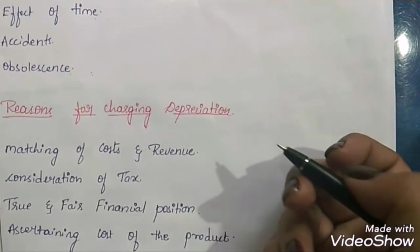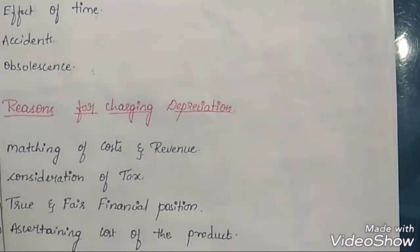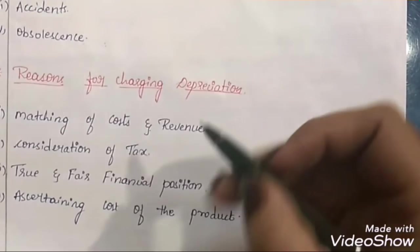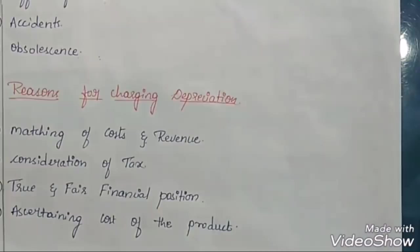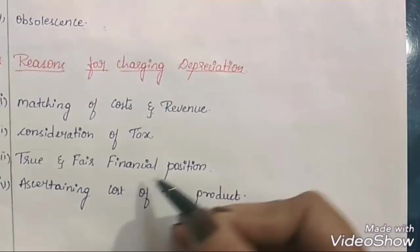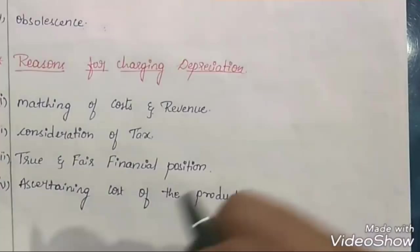Another reason is consideration of tax — when we charge depreciation on assets, we have to pay lesser tax, so depreciation is charged as part of tax planning. Next is true and fair financial position: by charging depreciation, we can ascertain the correct value of the fixed asset. When the correct value is mentioned in the balance sheet, it shows the true and fair financial position.